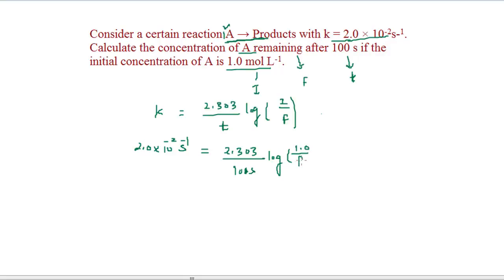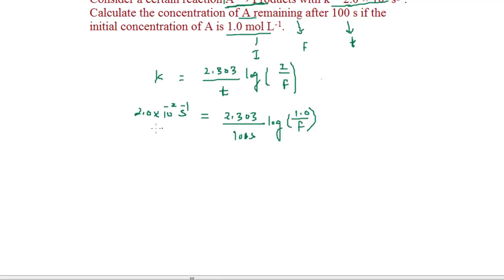We can do the cross multiplication to simplify it further. Here we get 2.0 × 10^-2 per second multiplied by 100 seconds, and 2.303 will come down, equals log 1.0 divided by F.